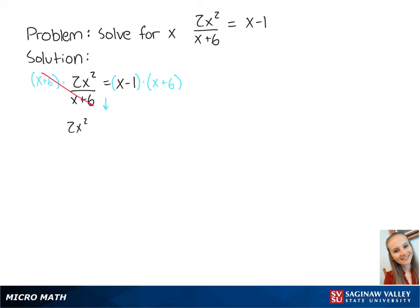Now we have 2x² equals x²+5x-6. To solve for x, we want the right side to equal 0, so we subtract x²+5x-6 from both sides of the equation.